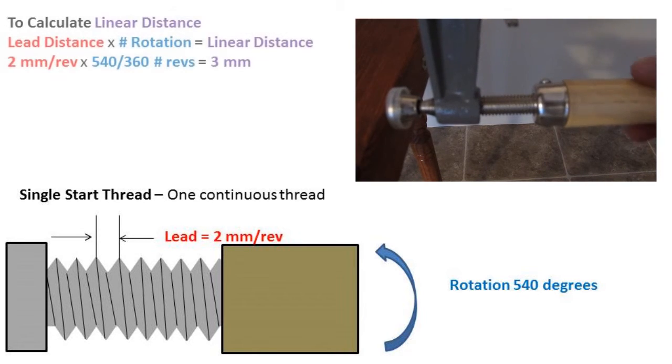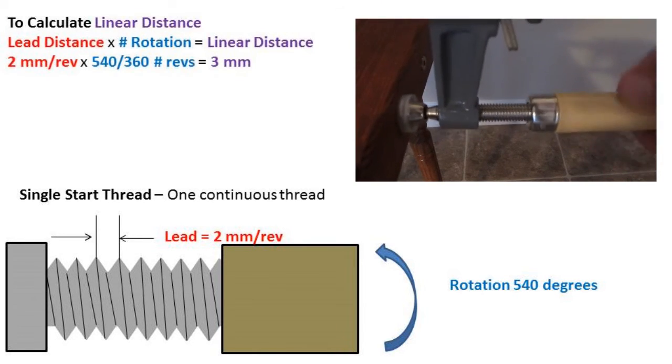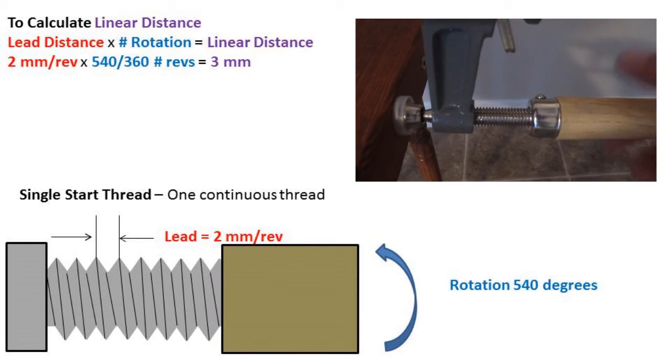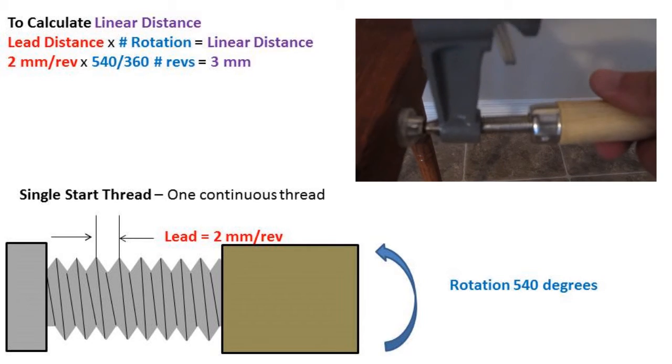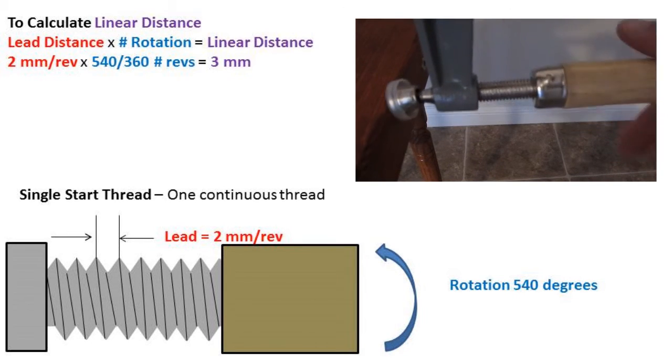What is the linear distance? If we take the lead distance of two millimeters and rotation of 540 degrees over 360 degrees in a complete rotation, we get 3 millimeters as our distance traveled.